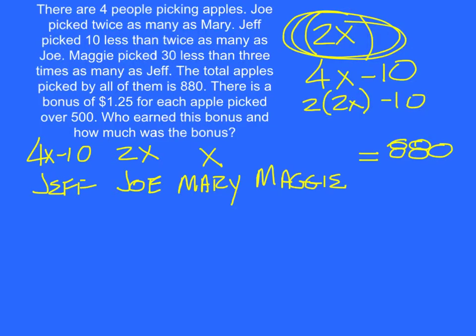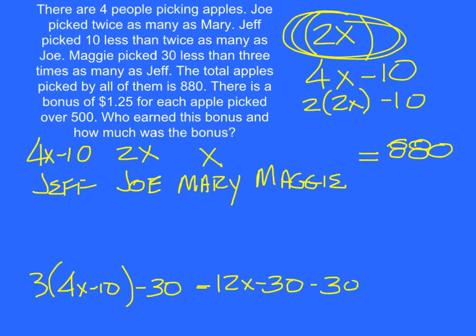Maggie picked 30 less than three times as many as Jeff. So three times as many as Jeff—I'll put that down here. Jeff, Maggie, is 30 less than three times as many as Jeff. And Jeff is 4X minus 10, three times Jeff, and then 30 less. So when we multiply through, we end up with 12X minus 30 from the parentheses, but we still have another minus 30 on the outside. So that's 12X minus 60 for Maggie.